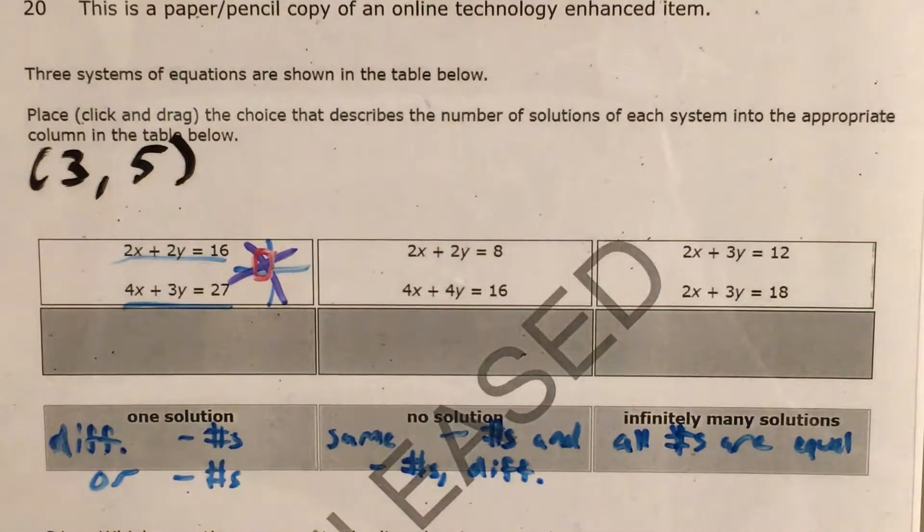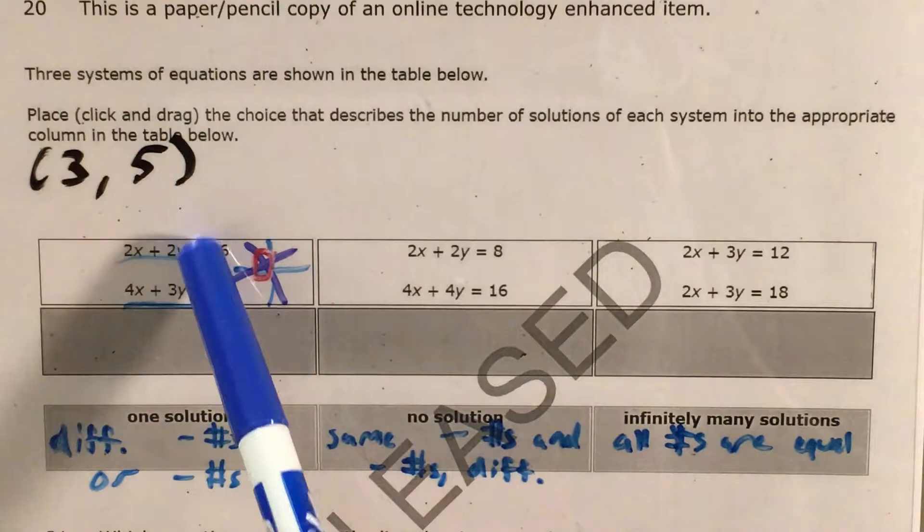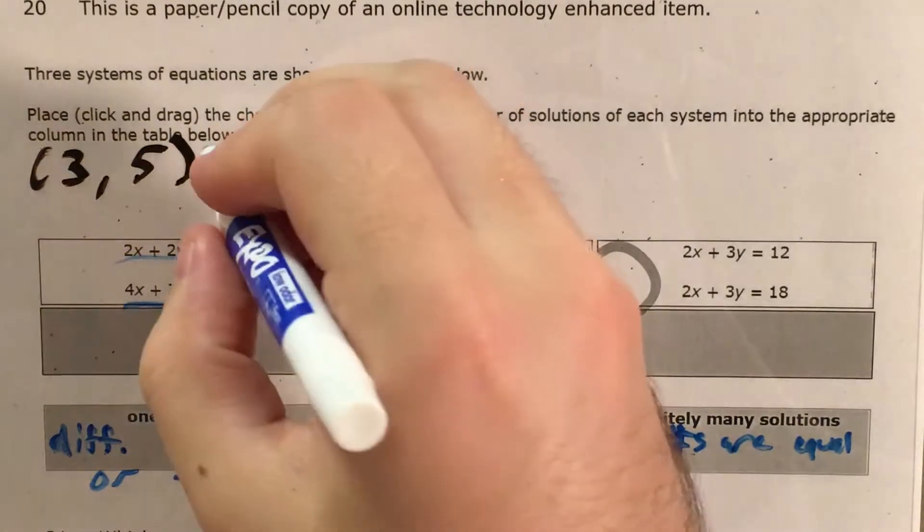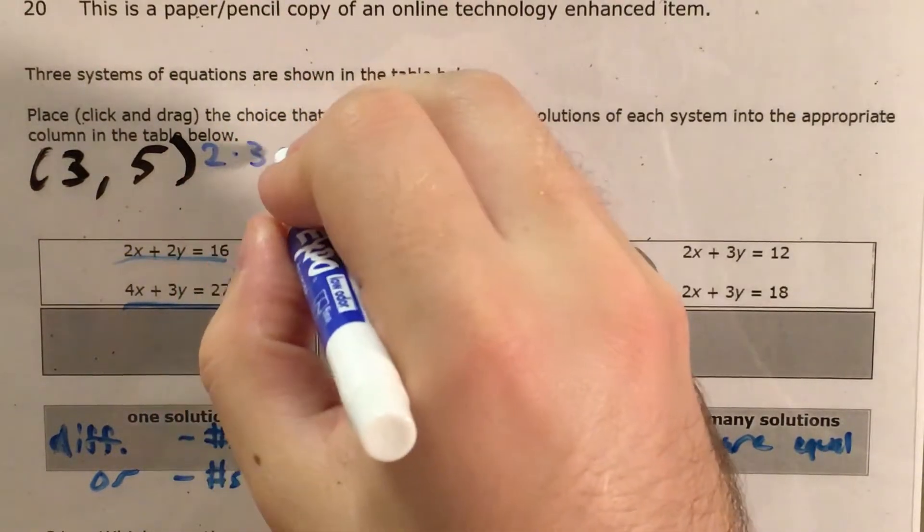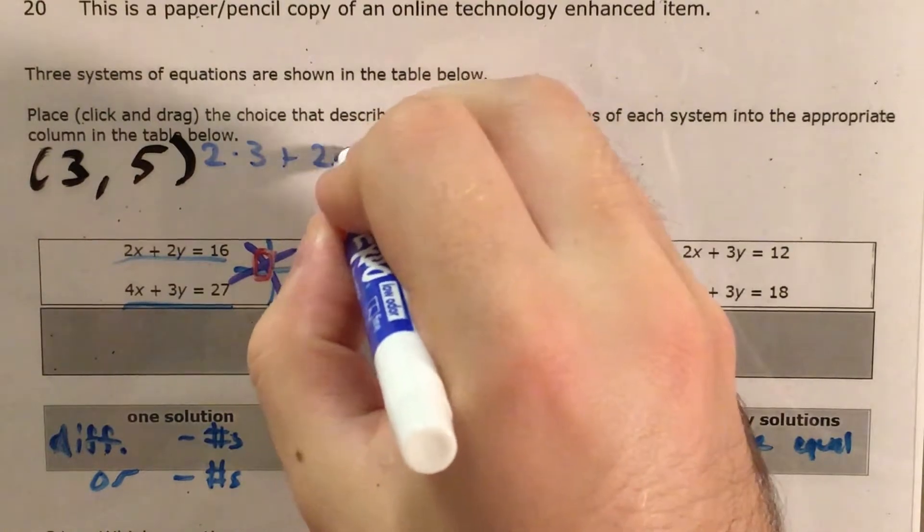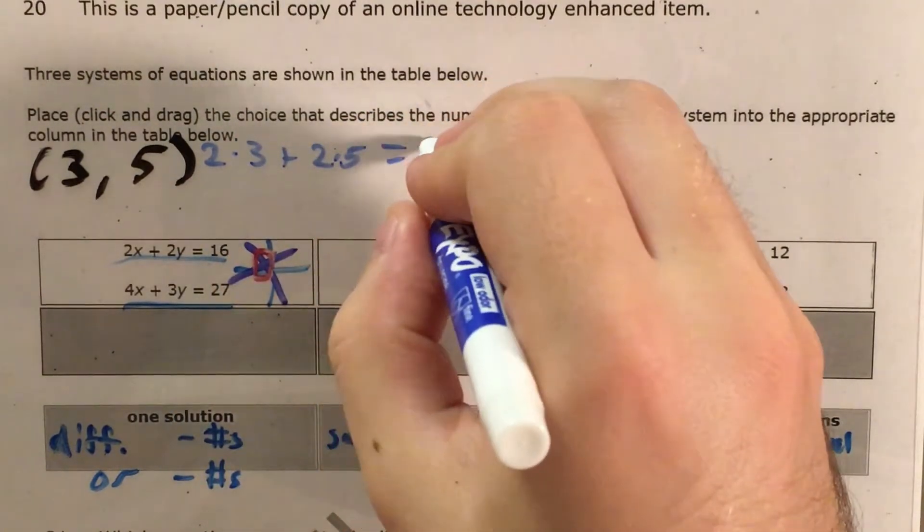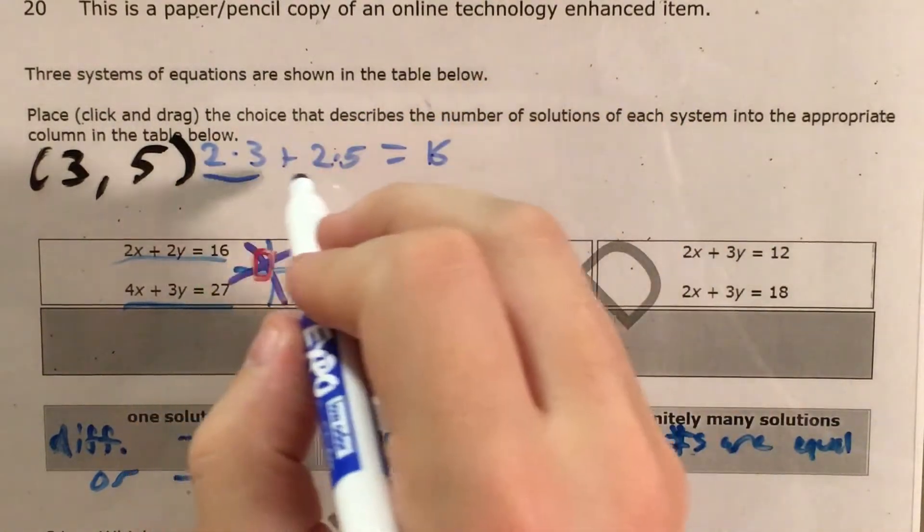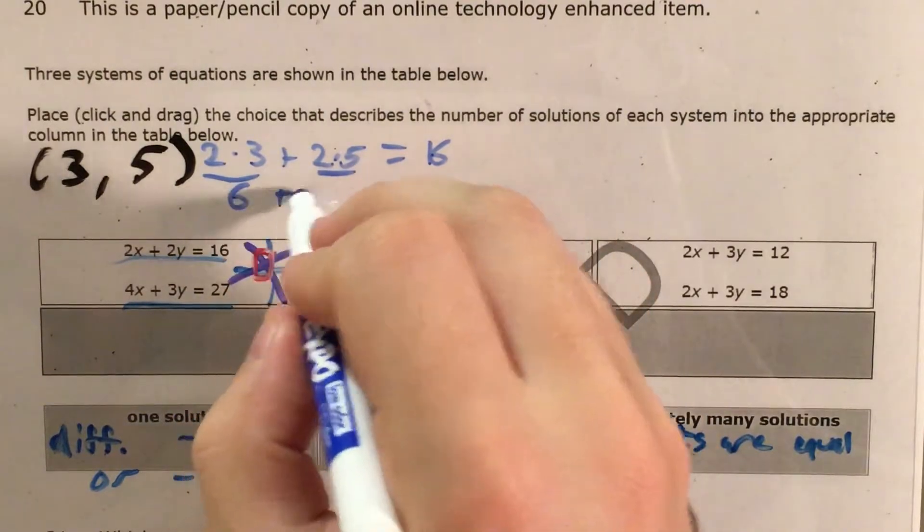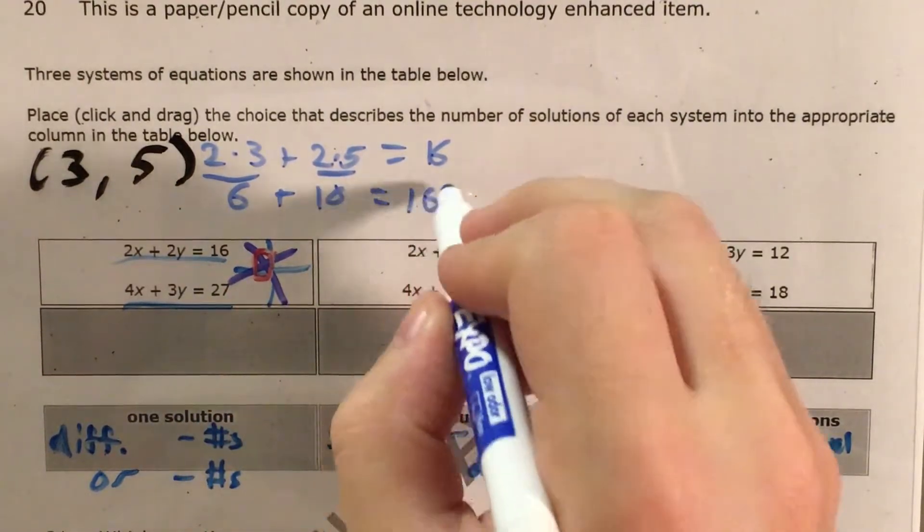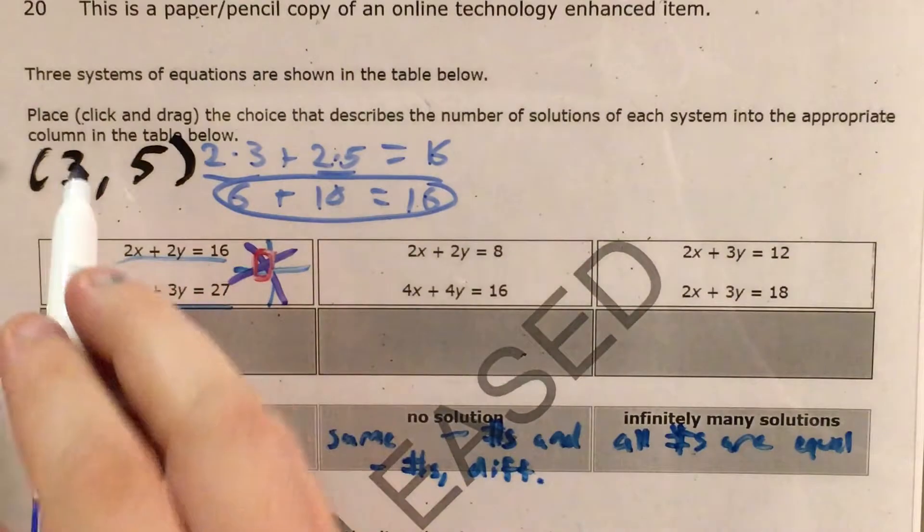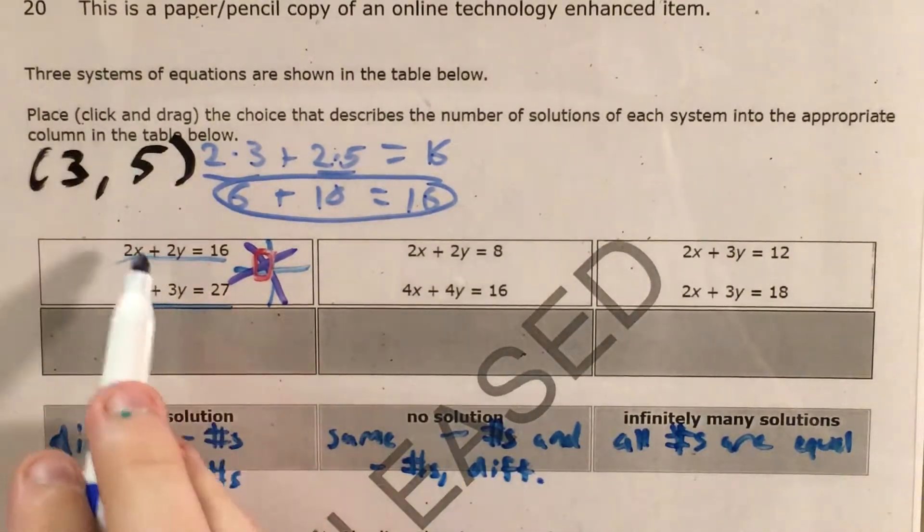Now the reason this works is because if I plug 3 and 5 into x and y in the first equation, I get 2 times 3 plus 2 times 5 equals 16. This is 6, this is 10, so that's true. The ordered pair x of 3, y of 5 makes this work.